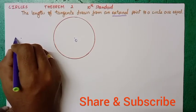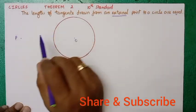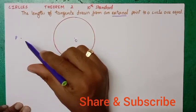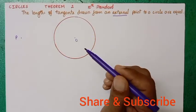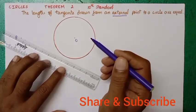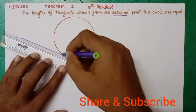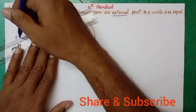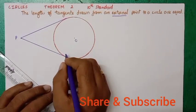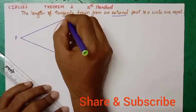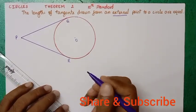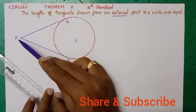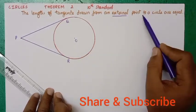How many tangents can be drawn from an external point to a circle? From external point P, we can draw only two tangents. I will be drawing two tangents right now from the external point P — this is one tangent, and let me draw another tangent from this point. Let this tangent touch the circle at point Q and this one at point R. There can be two tangents.